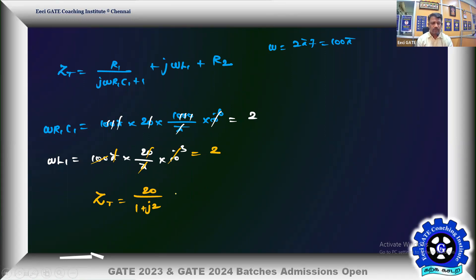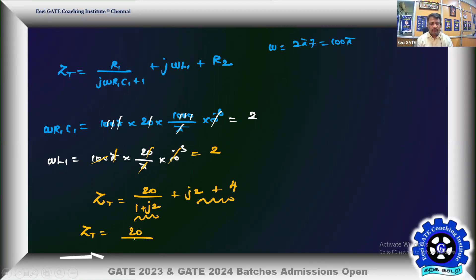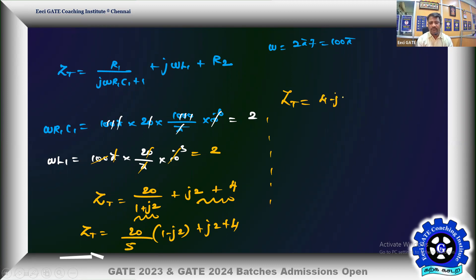With ω·R1·C1 = 2 and ω·L1 = 2, Z_total = 20 / (1 + j2) + j2 + 4. To convert 20/(1 + j2) to real and imaginary form, multiply numerator and denominator by the complex conjugate (1 − j2): denominator becomes 1² + 2² = 5. So 20/5 × (1 − j2) = 4 − j8. Therefore Z_total = (4 − j8) + j2 + 4 = 8 − j6.